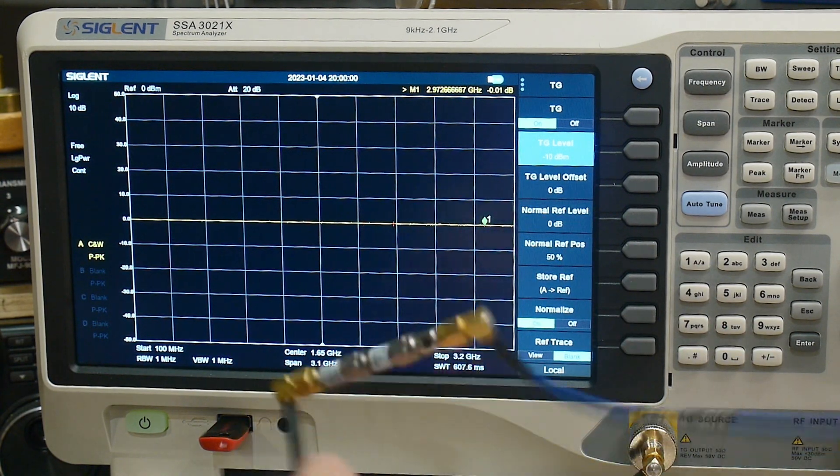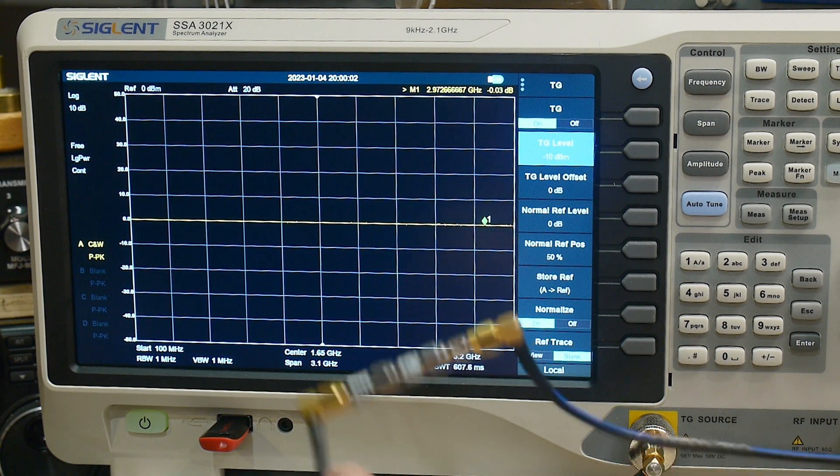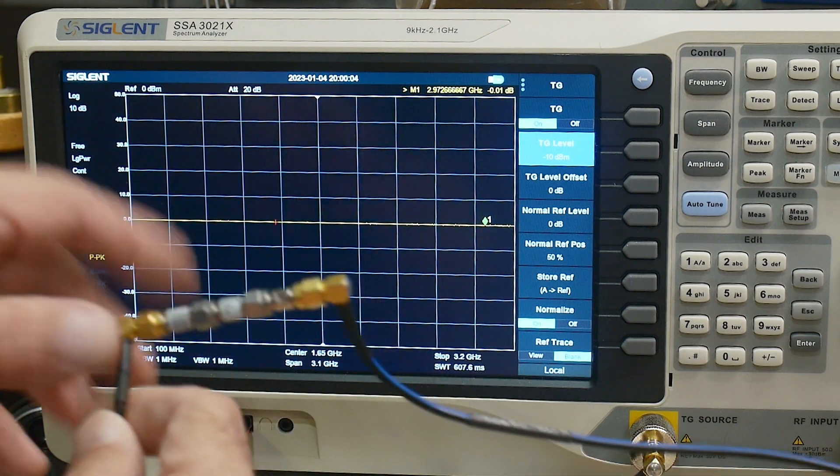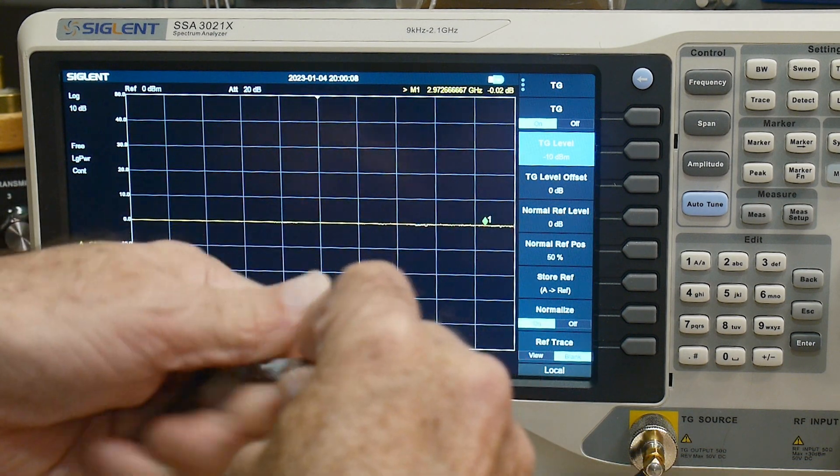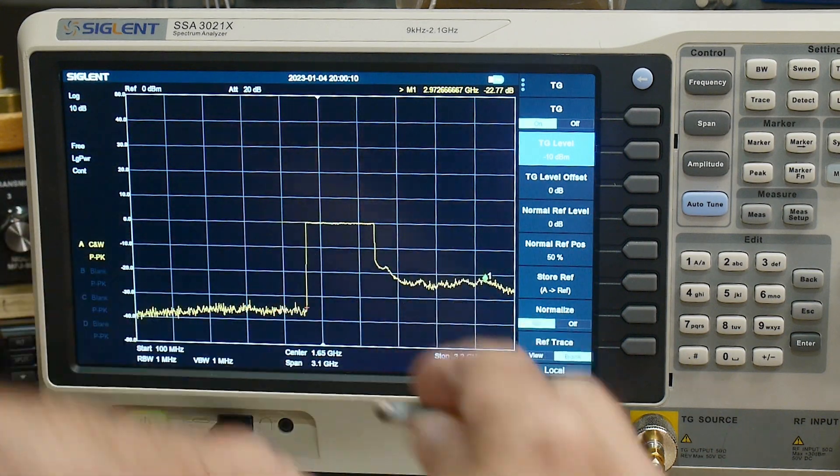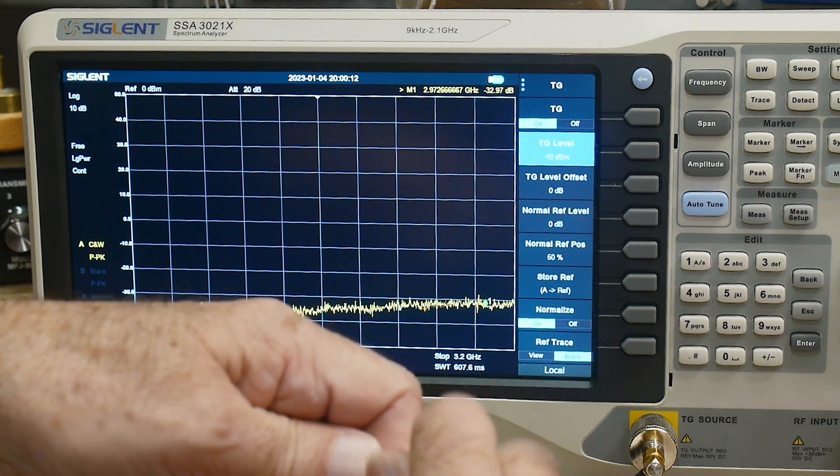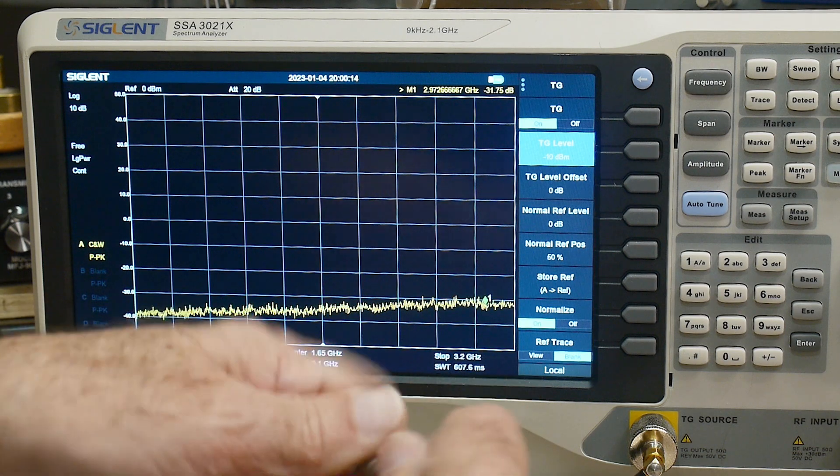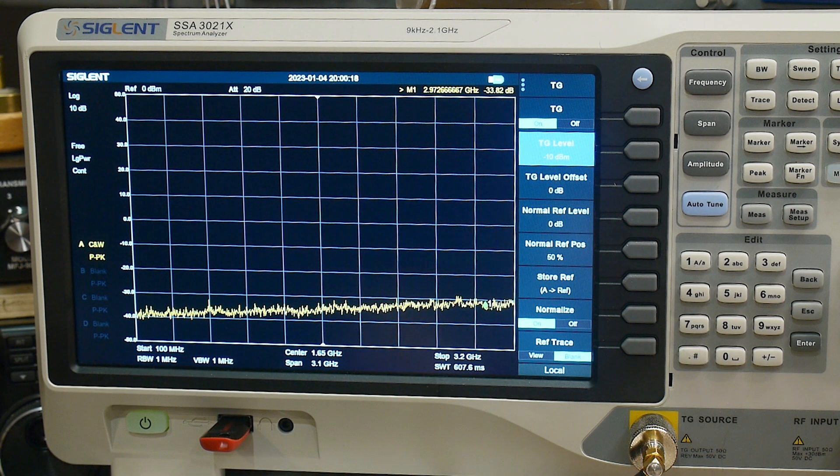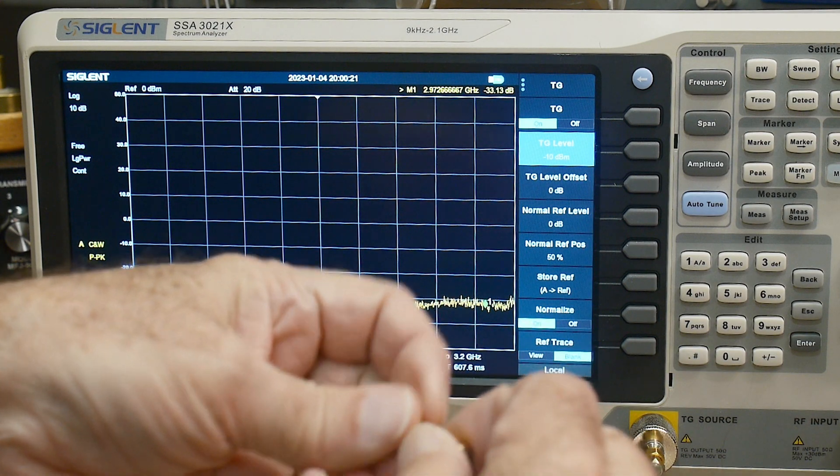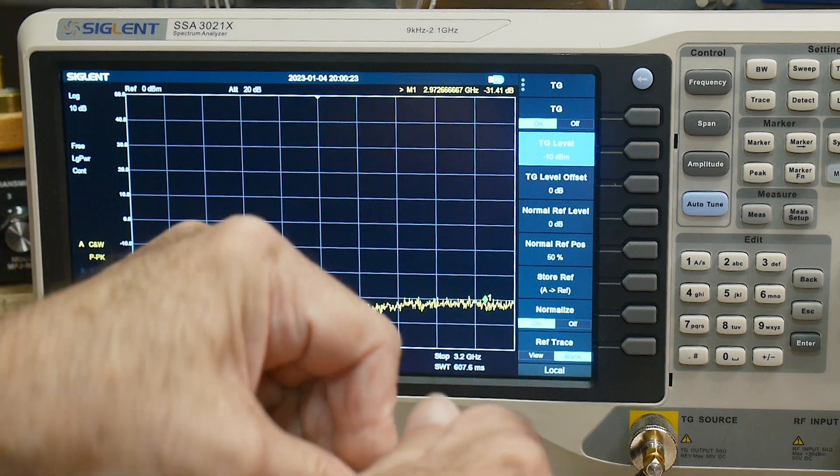Now we have a flat line but we have six dB of attenuation. So now what we're going to do is keep these two attenuators on the ends of our cables.